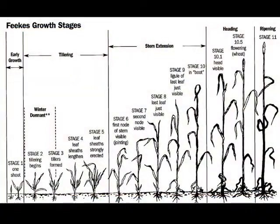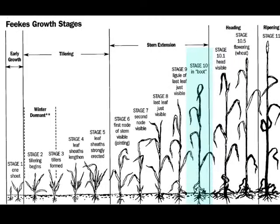For most fungicide applications in general, the majority are going to go around flag leaf to head emergence, somewhere near up to flowering. If you're targeting scab, you're going to have to be spraying during the flowering process. If I had to pick one stage for most foliar diseases, excluding head scab, I'd say boot would be a great time to be spraying a fungicide.